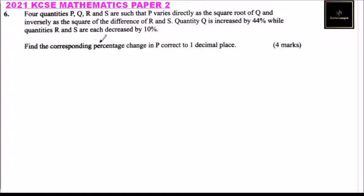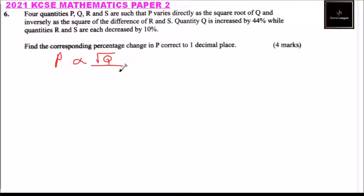From the statement, we can write the expression of P in terms of Q, R, and S. P varies directly as the square root of Q, and inversely — inversely means these terms will be in the denominator — inversely as the square of the difference of R and S. So that is what that statement means.